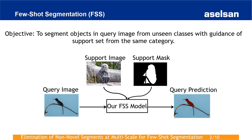Few-Shot Segmentation addresses the problem of making pixel-wise prediction for a target image, called the query, from unseen classes with the guidance of a support image and its mask from the same category.